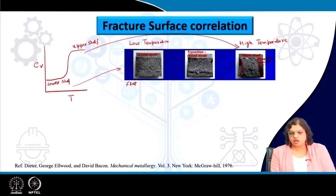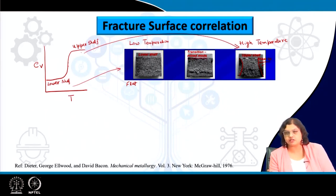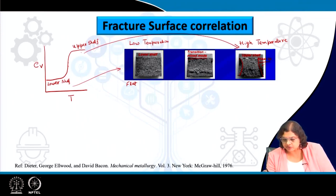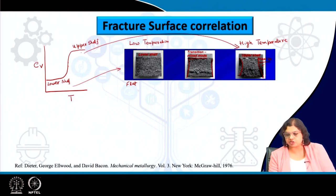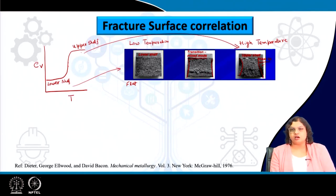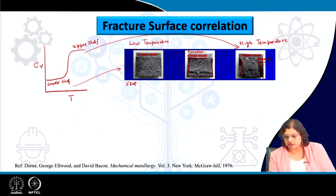In between, at any position in the transition zone, we see a mixed mode fracture with signatures of both ductile and brittle fracture — some amount of shear lip, but much narrower compared to the upper shelf. The internal portion, particularly near the center, is completely flat, whereas near the edges there is some amount of shear lip.